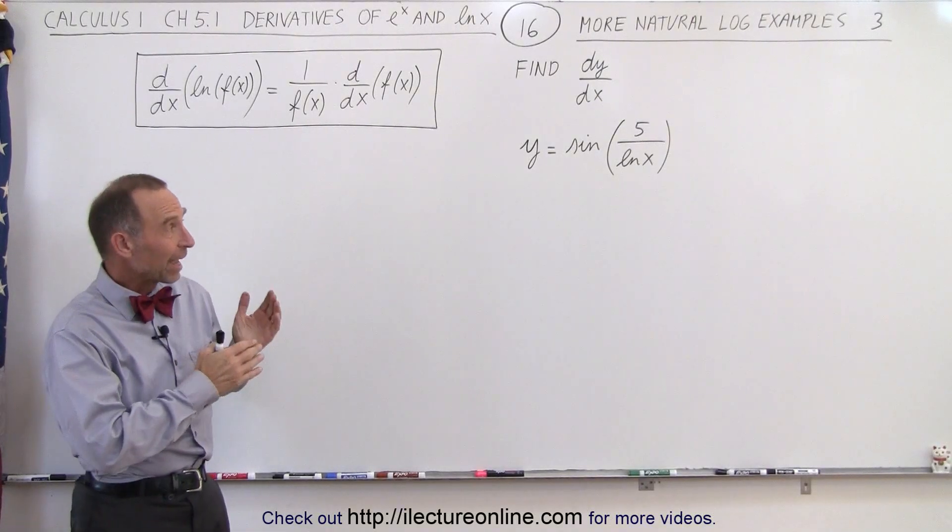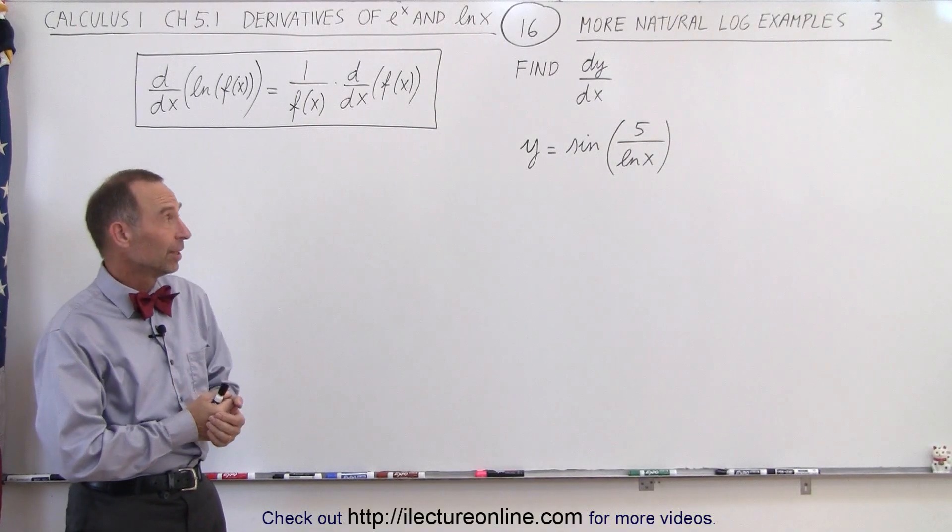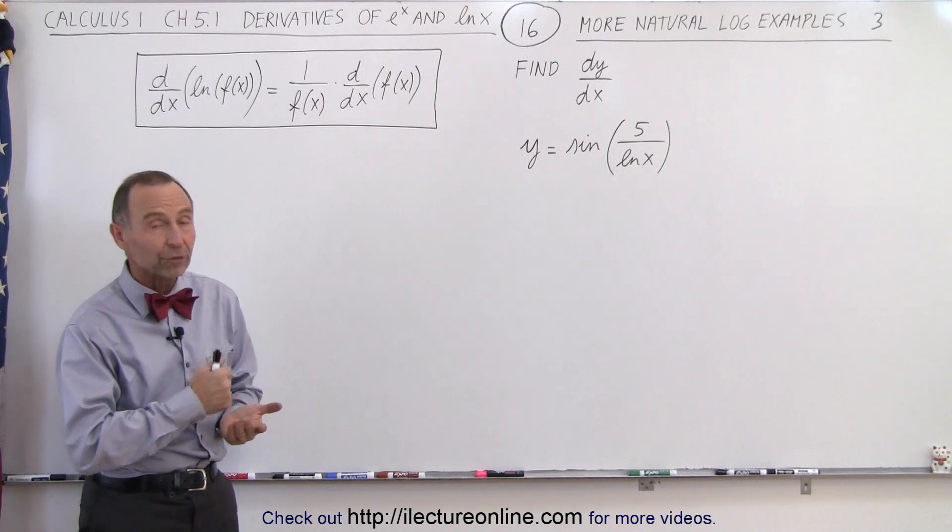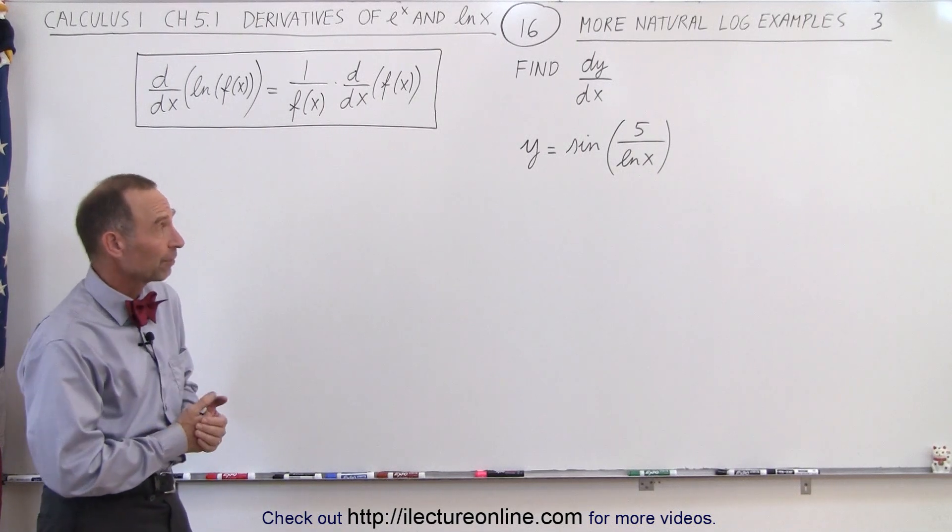Welcome to Electron Line. Here we have kind of an interesting example: the sine of 5 over the natural log of x, and we're supposed to find the derivative of that.